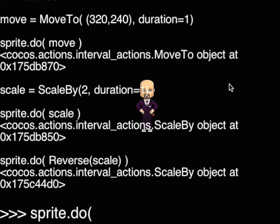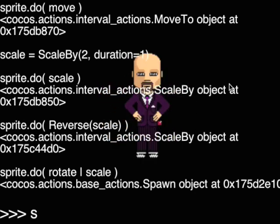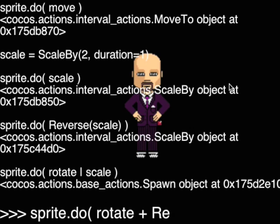Using the pipe operator you can execute more than one action at the same time. You can use the plus operator to execute actions sequentially — one action then the other one. For example, rotate, then scale.